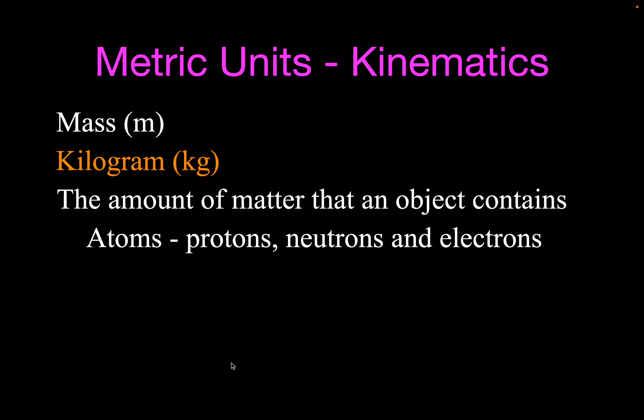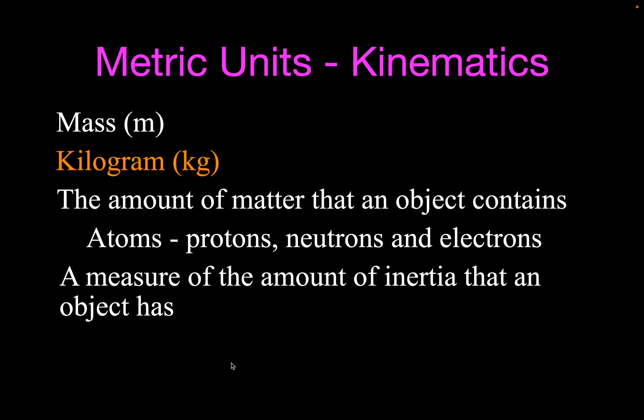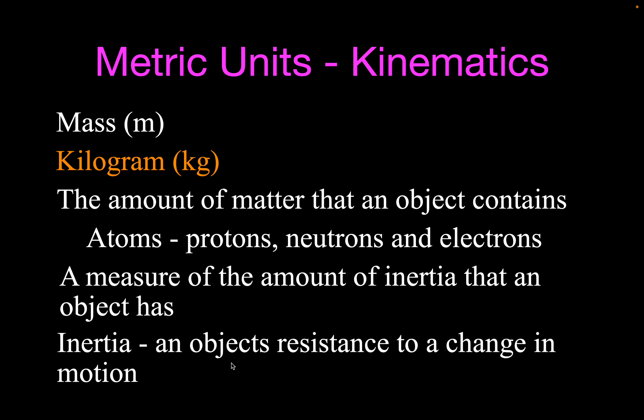So the more mass you have, the more kilograms you have, and the more atoms, protons, neutrons, and electrons. A more scientific definition is that mass and the kilogram is a measure of the amount of inertia that an object has. Inertia is an object's resistance to a change in motion. Objects don't like to have their motion change because they have inertia. And the more mass something has, the more inertia it has, and the harder it is to change its motion.